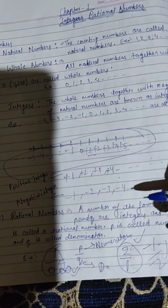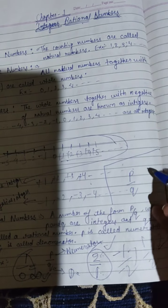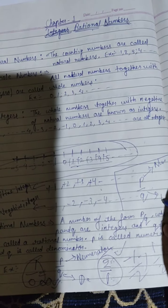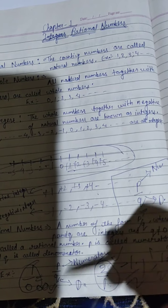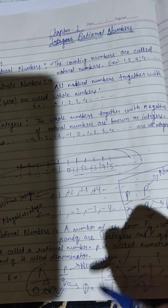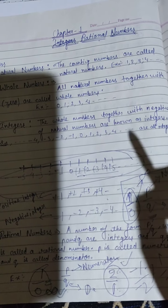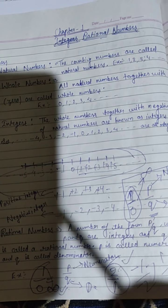अब ध्यान से देखना है — यह p/q है, जो Rational Number का part है। इसमें p को Numerator बोलते हैं और q को Denominator बोलते हैं। यहाँ ध्यान से देखना — q is not equal to 0। q की value कभी भी 0 नहीं हो सकती। अगर p की value 1 है और denominator में 0 है, तो वो Rational Number नहीं है — क्योंकि वह infinite के equal हो जाएगा। Always याद रखना: अगर कभी भी किसी number को 0 से divide करते हो, तो value infinite आती है।